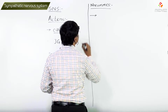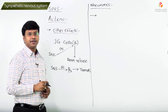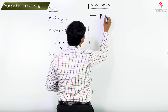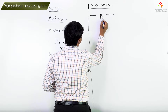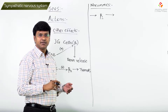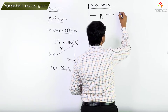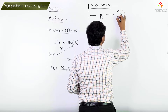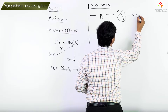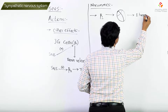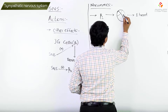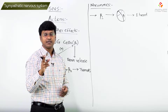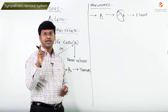Regarding the distribution of the beta receptors — you take beta-1 receptors. Where are beta-1 receptors present? They are present on the heart. How should you remember this? We have only one heart. So the receptors present in this one heart are beta-1 receptors.